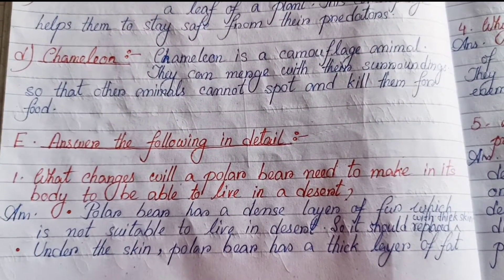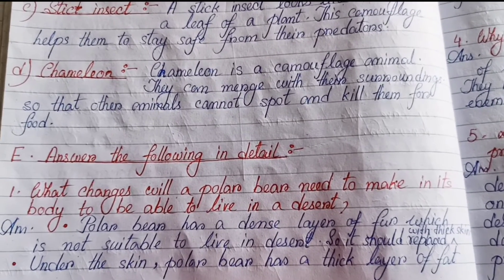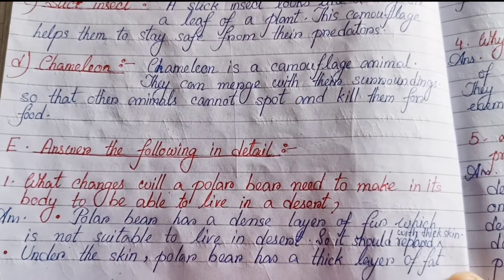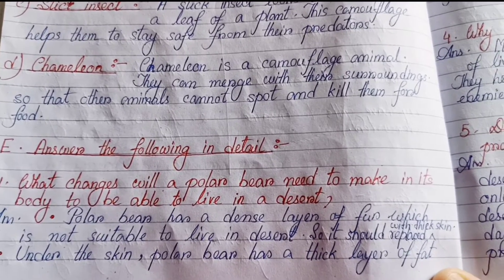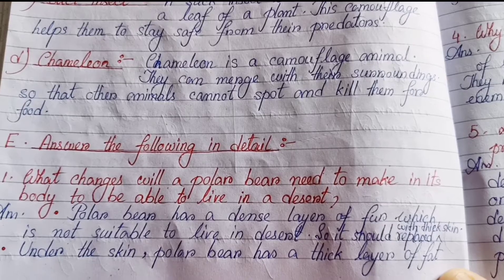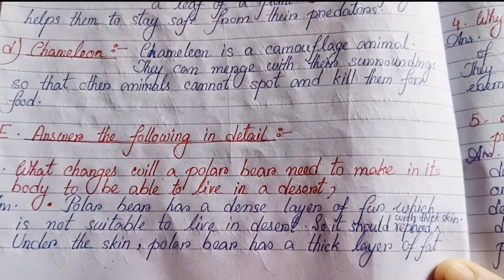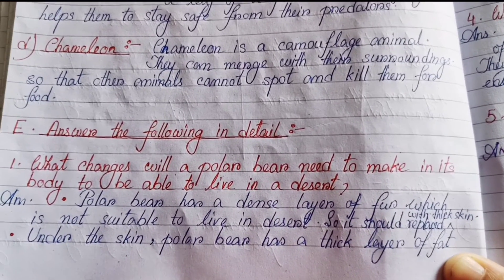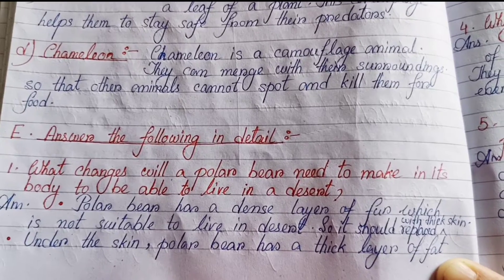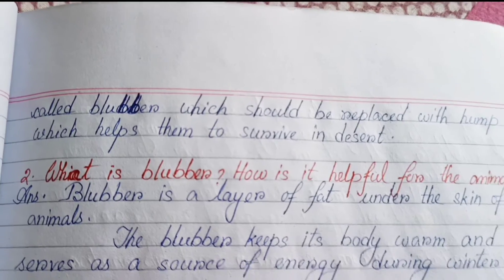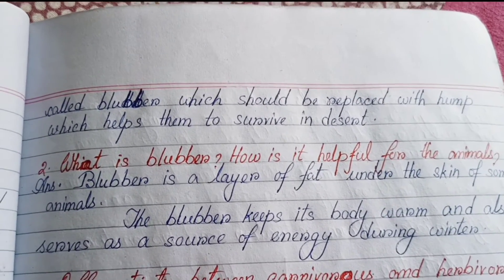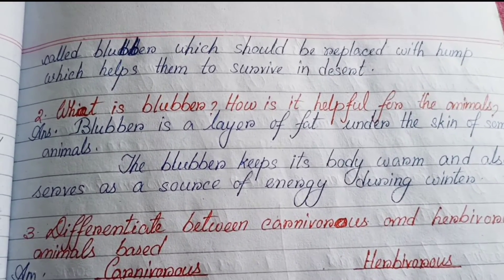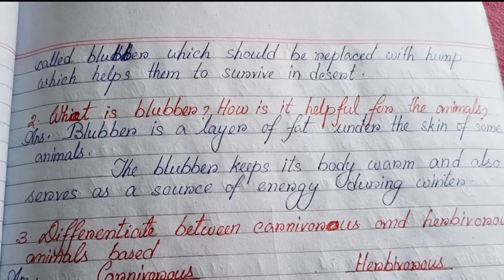Number one — What changes will a polar bear need to make in its body to be able to live in a desert? A polar bear has a dense layer of fur which is not suitable for living in a desert, so it should be replaced with thick skin. Under the skin, the polar bear has a thick layer of fat called blubber, which should be replaced with a hump to help it survive in the desert.